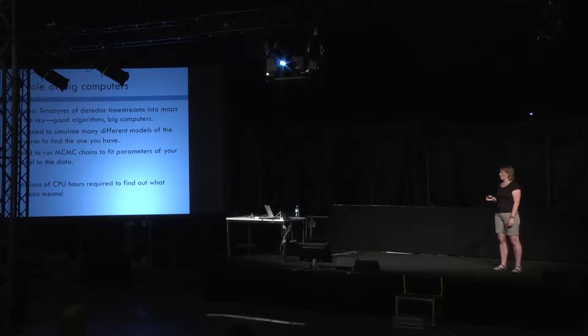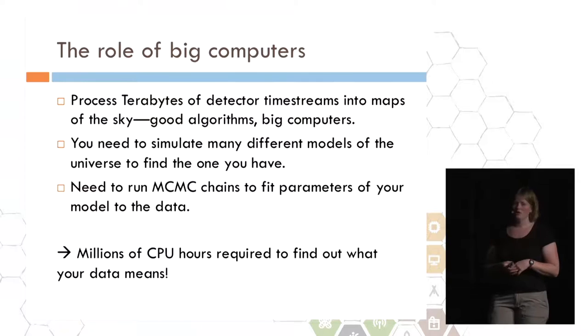One thing I really need to point out here is the role of big computers. It's really great that you can measure a map of the microwave sky, but you need to be able to process terabytes of data into these maps. When you scan a bolometer over a source, all you see is an increase of power for a small amount of time. You somehow have to turn that information into a map. What you need is good algorithms and big computers. Additionally, you need to simulate many different models of the universe to find out the one you have. Finally, you need to be able to run Markov chain Monte Carlo simulations to find the parameters of your model and fit them to the data that you have. In order to do this, you need millions of hours of CPU time. This is something that's really only been possible with the advent of big computing.